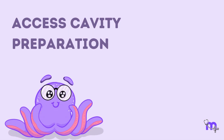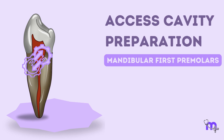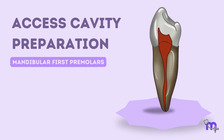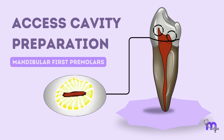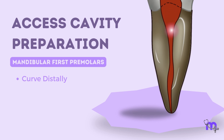Now let's move on to discuss the access opening of mandibular premolars. The first premolar is the transitional tooth, and thus the anatomy tends to resemble both the anteriors and posteriors. While the buccal pulp horn is prominent, the lingual horn reduces in height as age progresses. The cross section is ovoid buccolingually. The mandibular first premolar has a short conical root, which is usually straight but can sometimes curve distally. In most cases, it has a single canal with an apical foramen, but the canal may bifurcate and exit as two apical foramina.